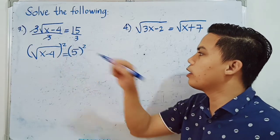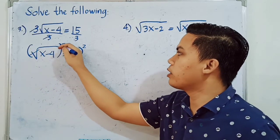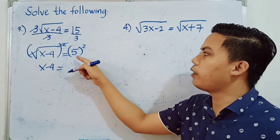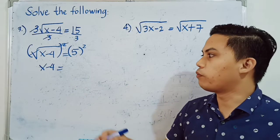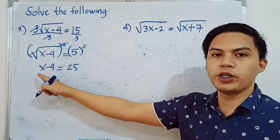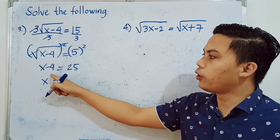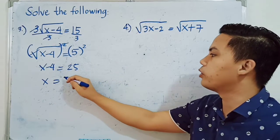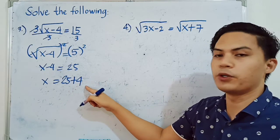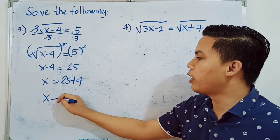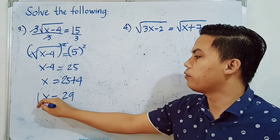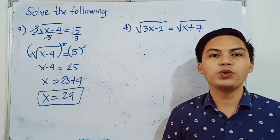Now we can square both sides of the equation. The radical sign is cancelled out, leaving X minus 4 on the left side. On the right side, 5 squared equals 25. We then solve for X by transposing negative 4 to the right side, so it becomes positive 4. 25 plus 4 gives us 29. The final answer is X is equal to 29.